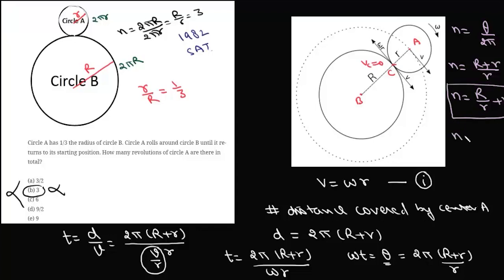So the number of revolutions in this case will be simply R by r is 3, 3 plus 1, which is 4. And that is the answer to the question.